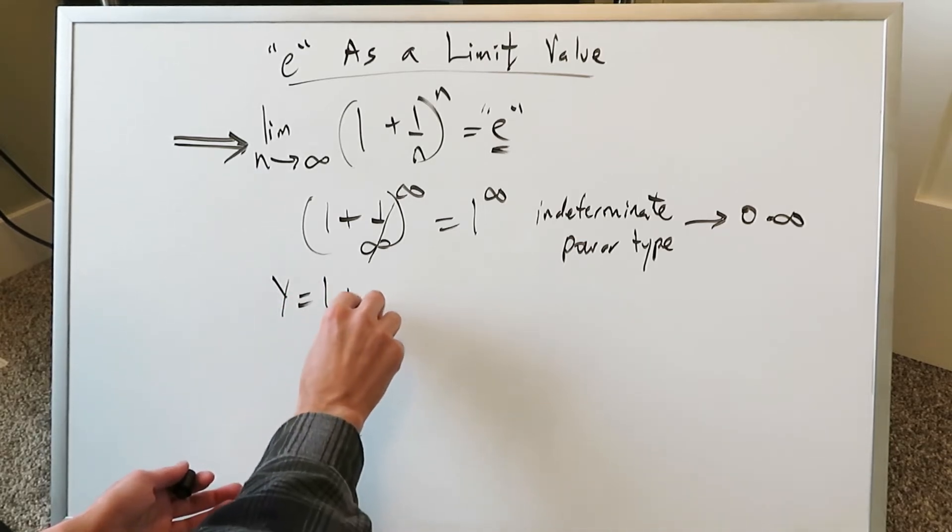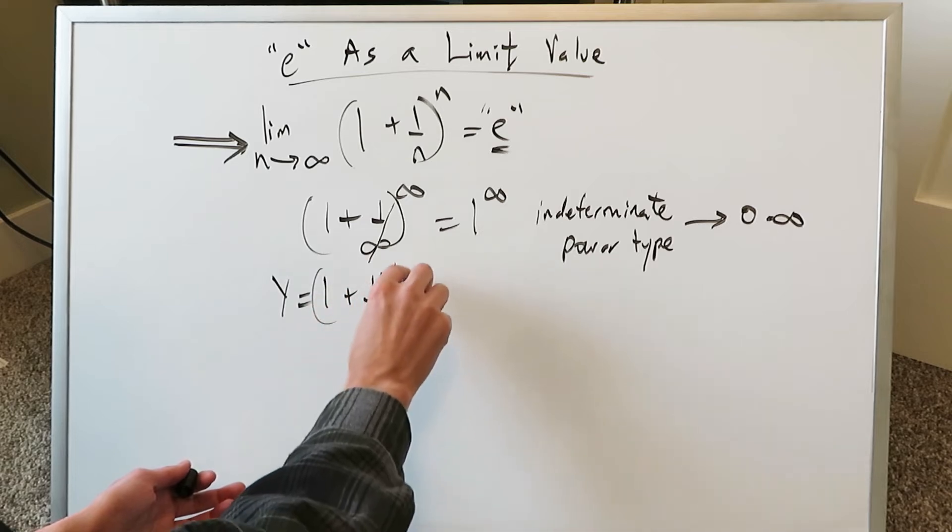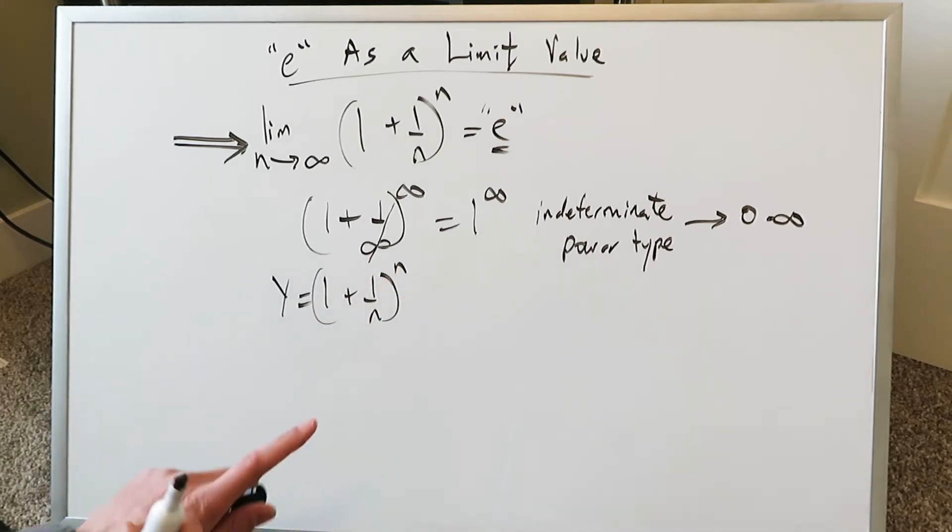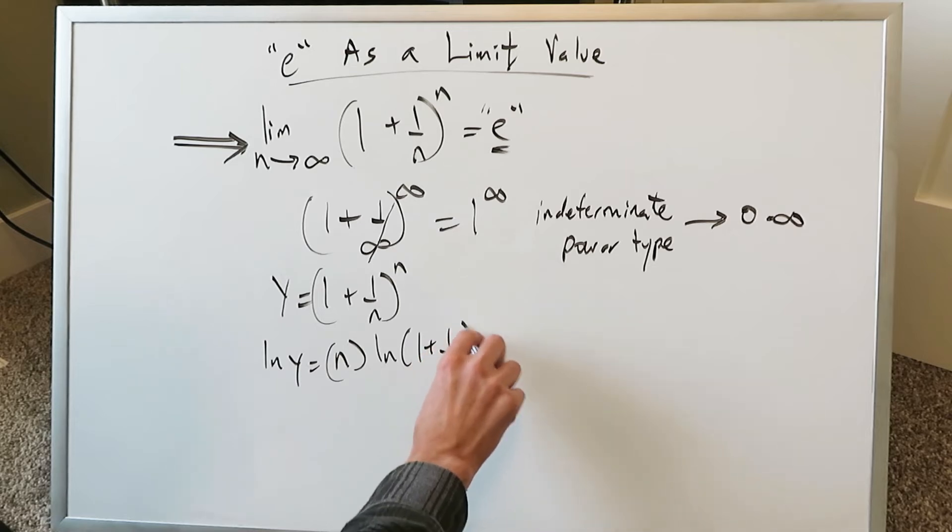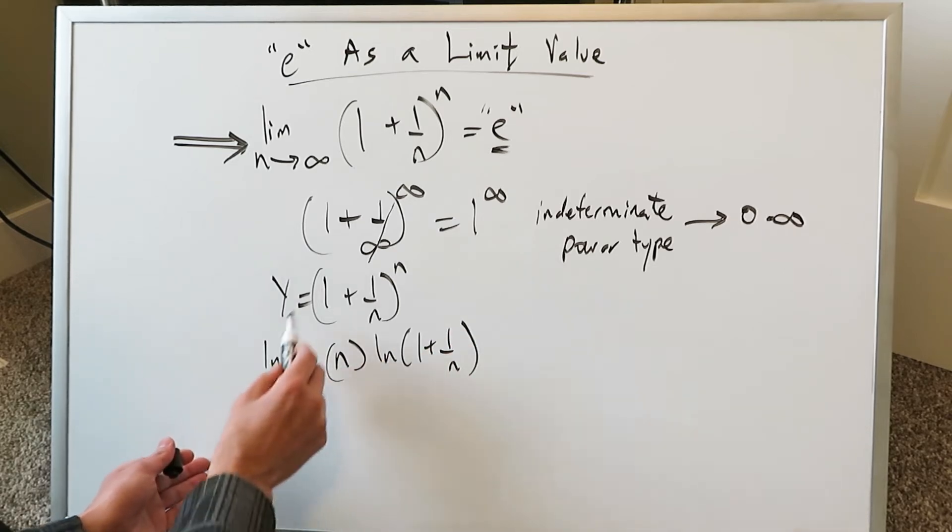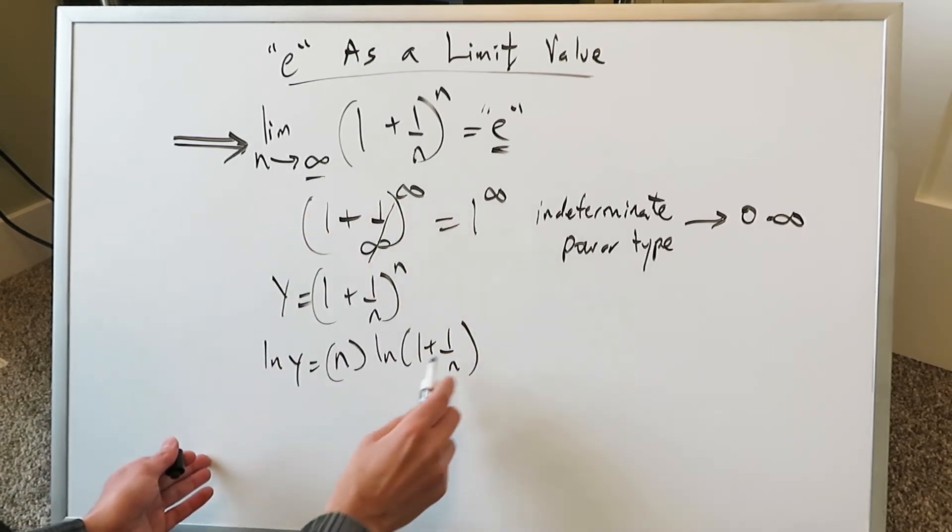We have an equation y is equal to 1 plus 1 over n to the power of n. This here is our function. If you were to employ the logs, the natural logs, you're doing ln y. The properties of logs, you get n. And here you get ln 1 plus 1 over n.